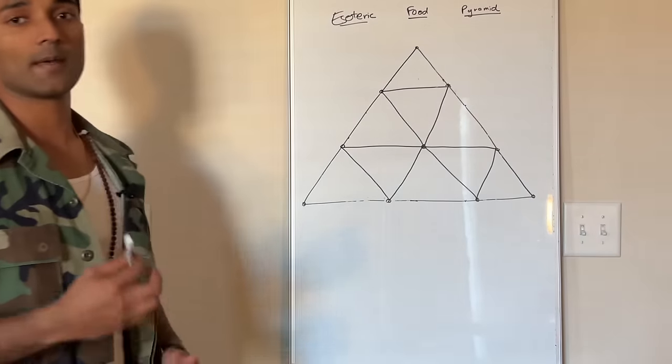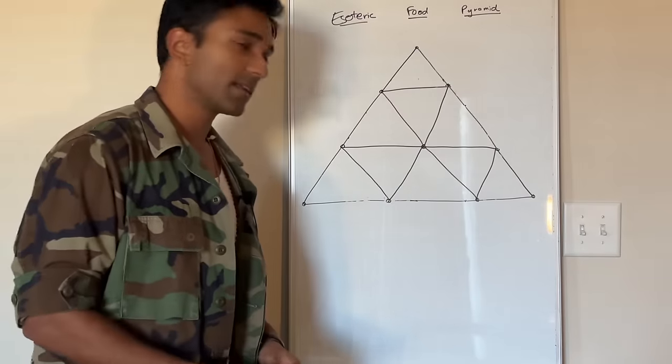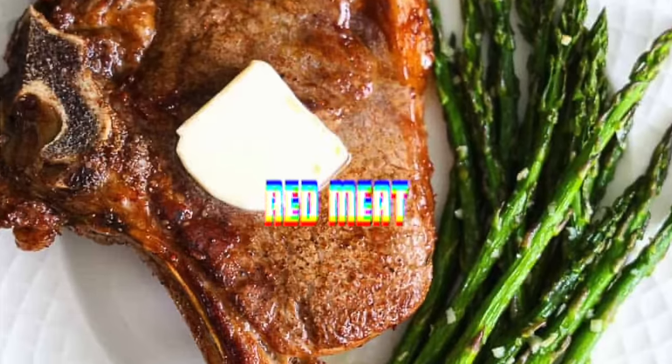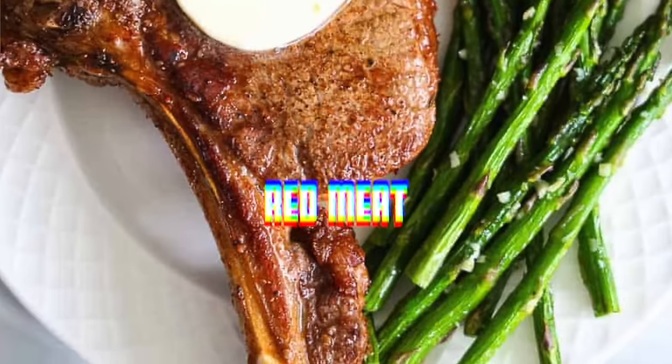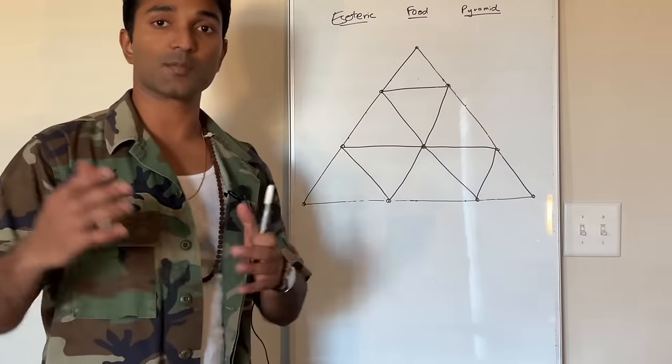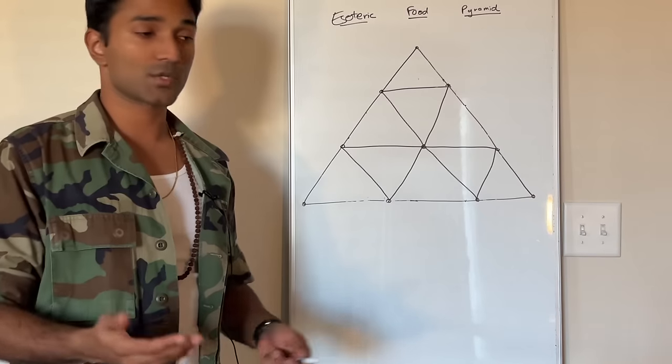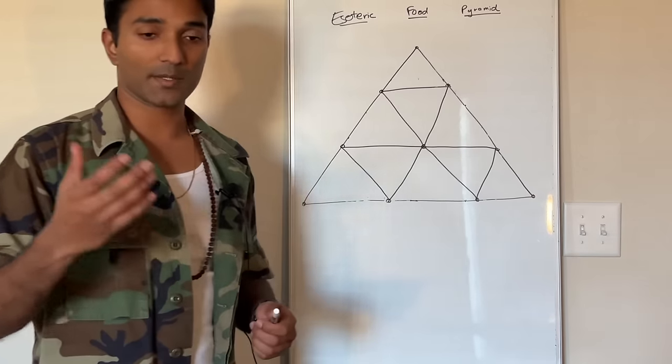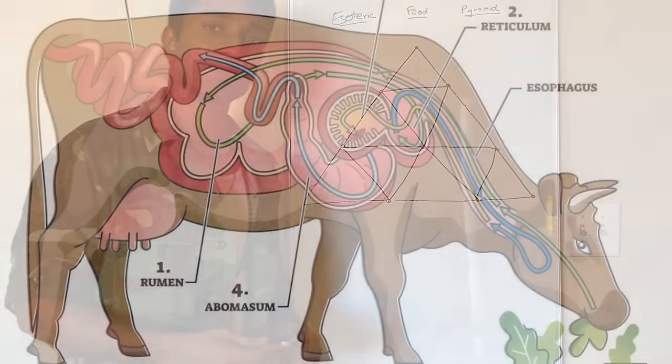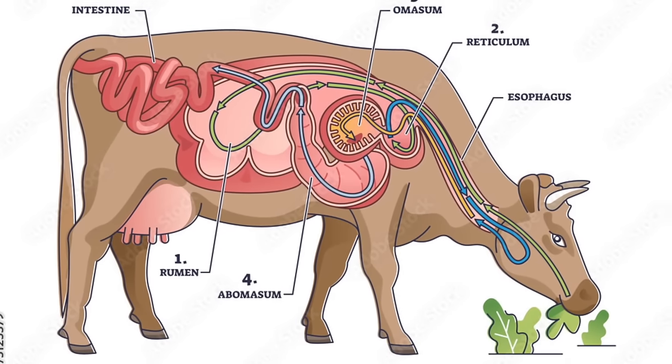So let's start off with the first thing. The keystone of this diet is red meat, especially red meat from ruminants. So ruminants are animals which have a multi-system digestive tract like cows, sheep, and lamb, goats.